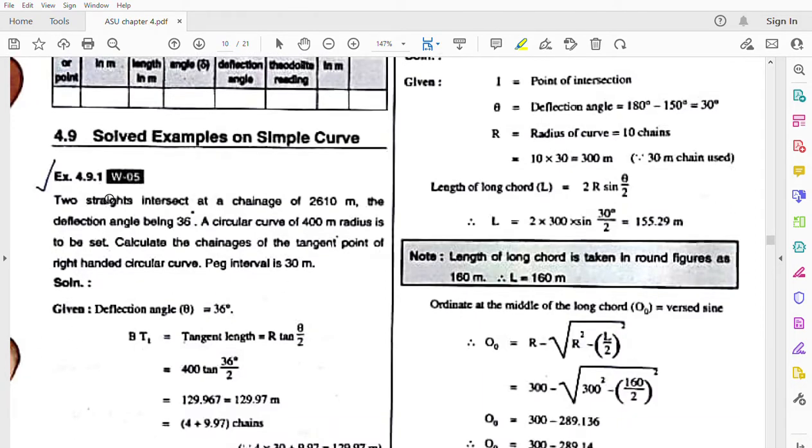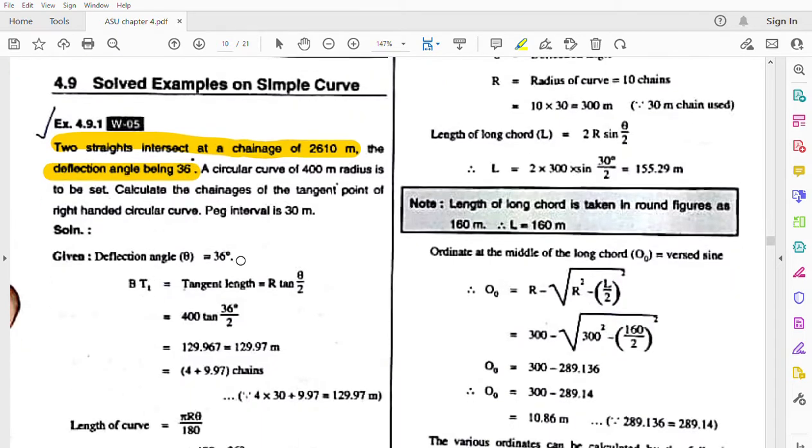Okay, this is the problem: two straights intersect at a chainage of 2610 meters. The deflection angle is 36 degrees. Deflection angle we denote as theta, so theta is given as 36 degrees. A circular curve of 400 meter radius - this radius, R, is given as 400 meters.